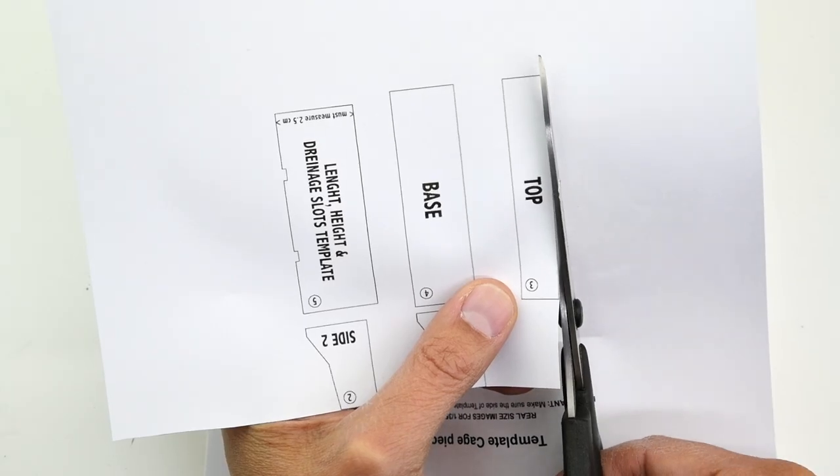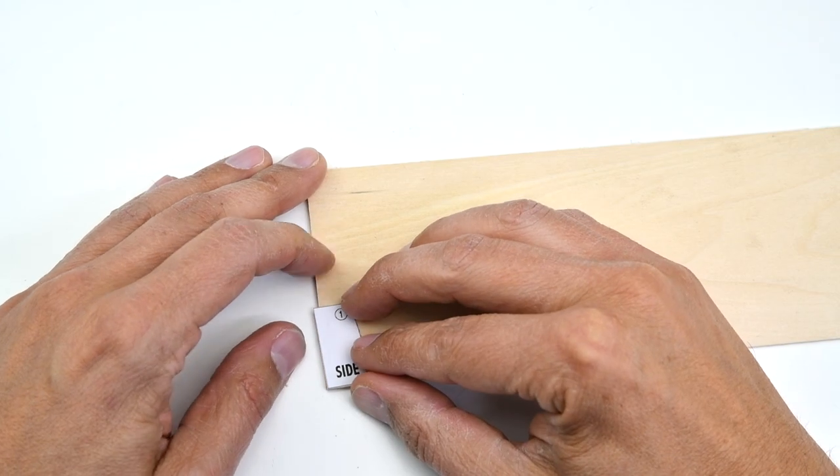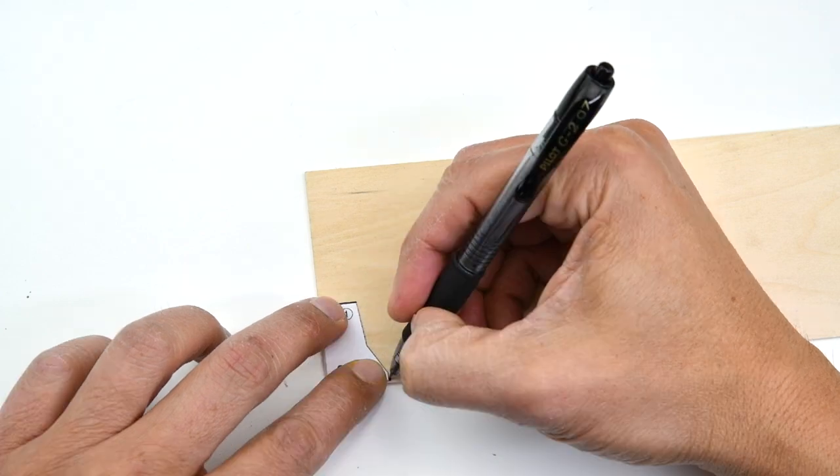During this phase, we will cut all the individual pieces from the printed page, positioning them on the balsa wood, using the shape as a guide to mark with the pen the cutting lines.